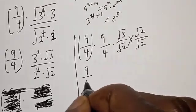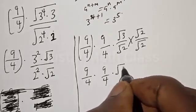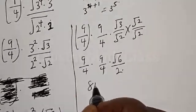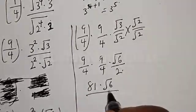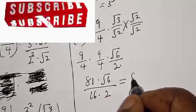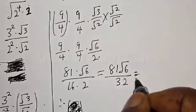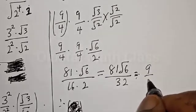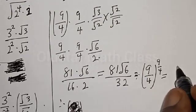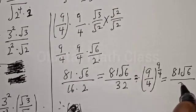We have 9 divided by 4, multiplied by 9 divided by 4, multiplied by root 3 times root 2 — that is root 6 — divided by root 2 times root 2, which is 2. Therefore we get 9 divided by 4, then 9 divided by 4, times root 6 divided by 2. Simplifying gives us 81 root 6 over 32.